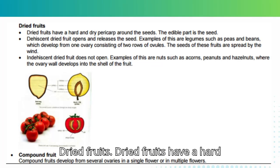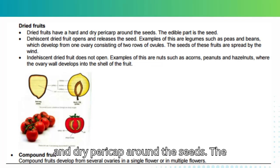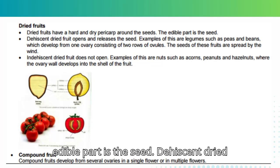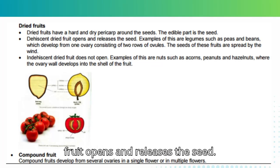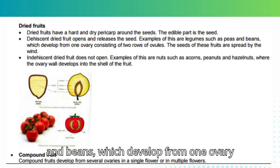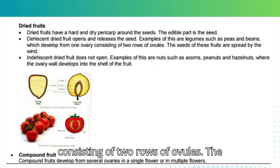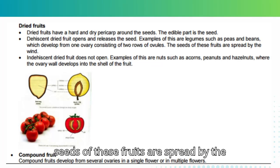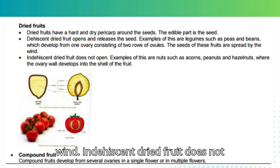Dried fruits have a hard and dry pericarp around the seeds; the edible part is the seed. Dehiscent dried fruit opens and releases the seed. Examples of this are legumes such as peas and beans, which develop from one ovary consisting of two rows of ovules. The seeds of these fruits are spread by the wind.